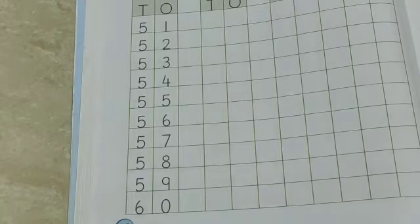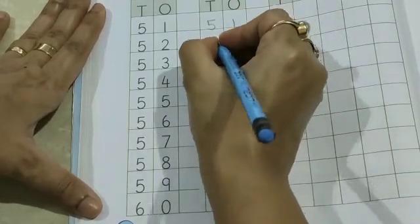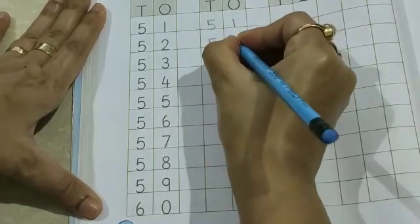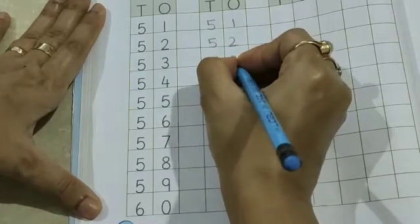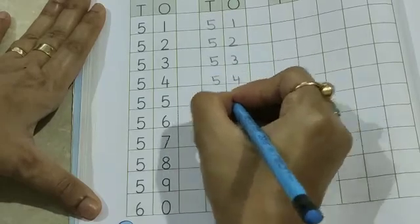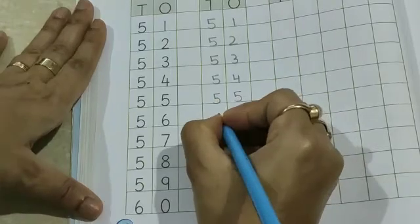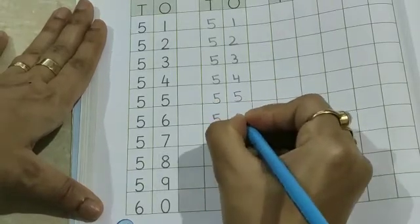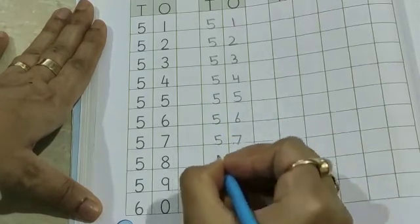Now, in the given place, we will write numbers from 51 to 60. Let's start. 51, 51, 51, 52, 52, 53, 53, 54, 54, 55, 55, 56, 56, 57, 57, 58, 59, 59, 60.